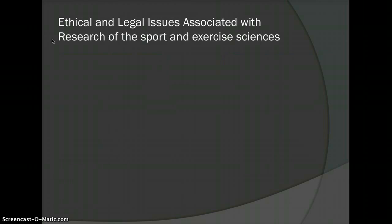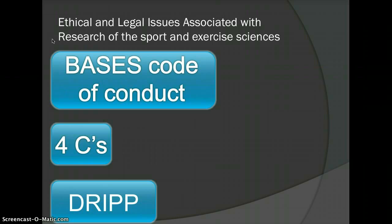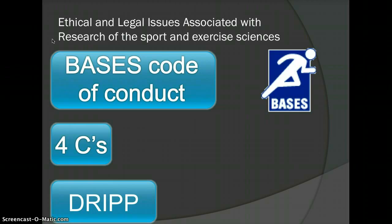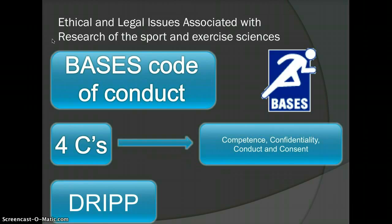How are ethical and legal issues clarified? The British Association of Sport and Exercise Science (BASES) sets the code of conduct. It is their responsibility to ensure that all sport and exercise science research is done in a way that is ethically and legally sound. Before a research project can begin, it must receive clearance from BASES. In order for permission to be granted, the research project must follow the four C's: Competence, Confidentiality, Conduct, and Consent.